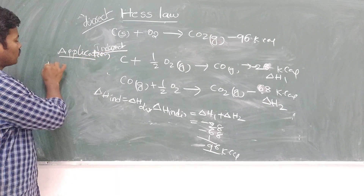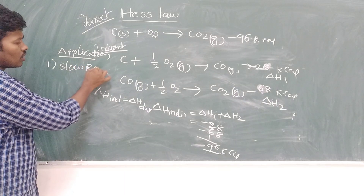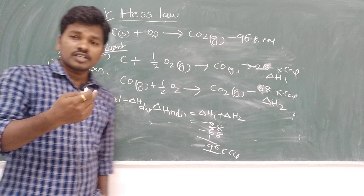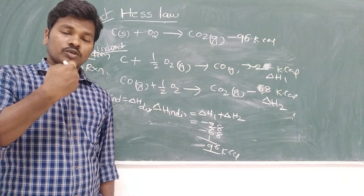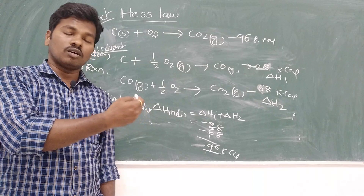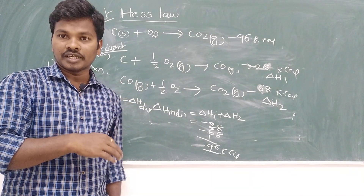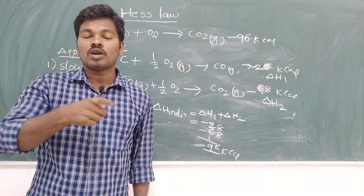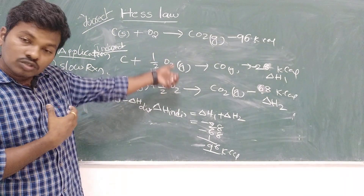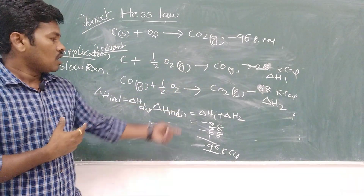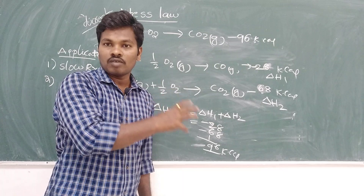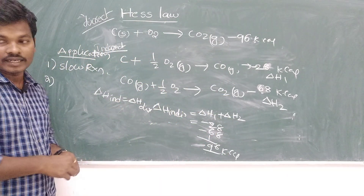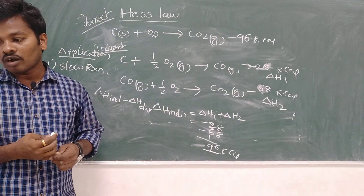The applications of Hess's Law include that it is useful for slow reactions. You can apply this law to reactions where a reactant cannot be converted into a product in a single step. When reactions involve several intermediate steps, you can calculate the enthalpy by adding the sum of all the enthalpies involved in those intermediate steps.